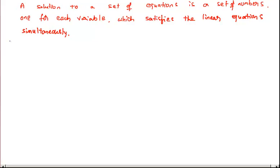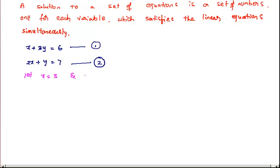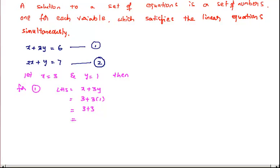Let us consider the two equations: x plus 3y is equal to 6 and 2x plus y is equal to 7. Let this be equation 1 and this be equation 2. Now let x is equal to 3 and y is equal to 1. For equation 1, LHS is x plus 3y. By substituting x equal to 3 and y equal to 1, we get 3 plus 3 into 1, which is equal to 3 plus 3, which is equal to 6.